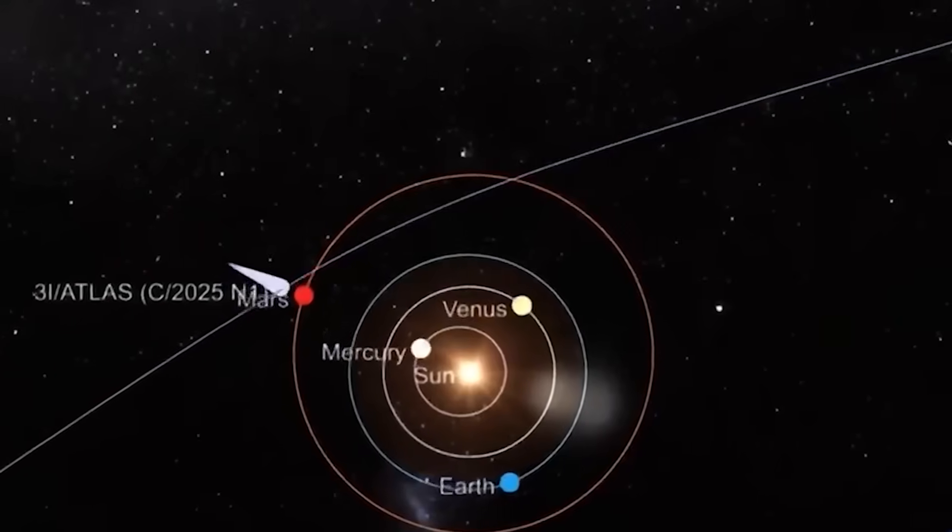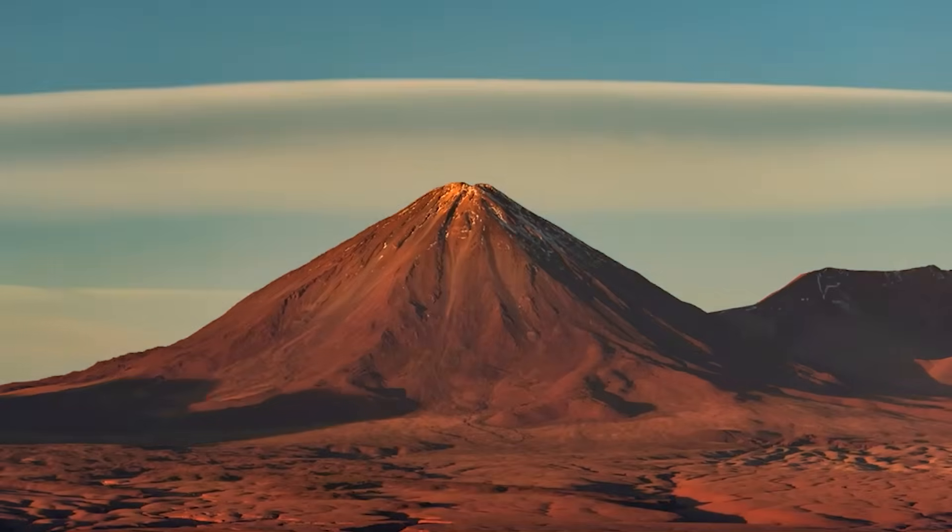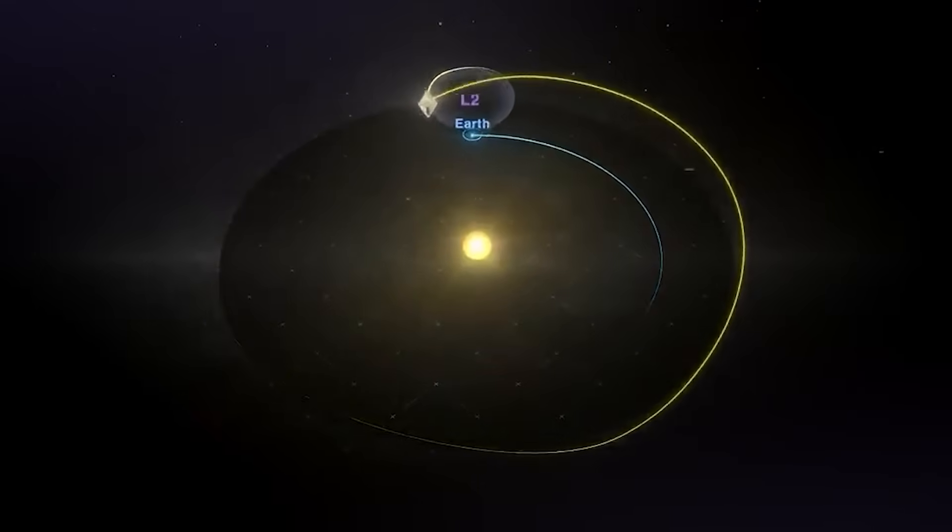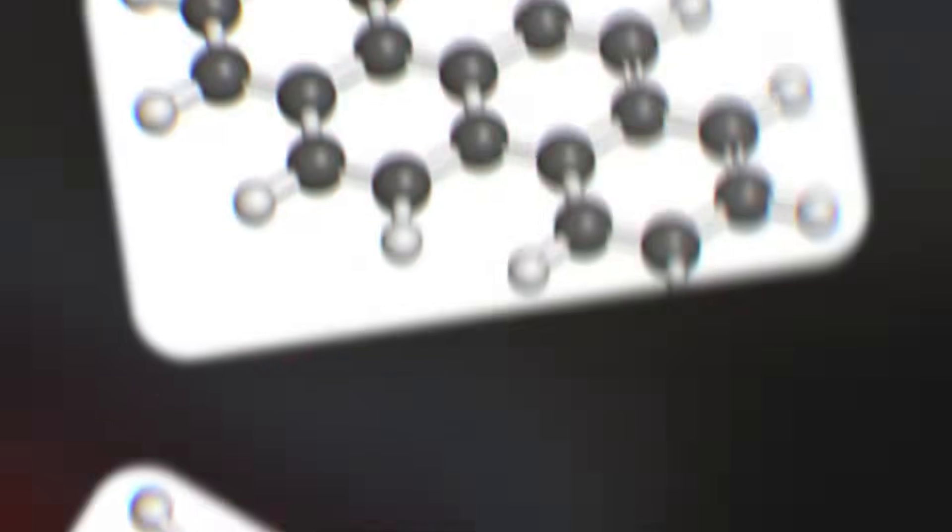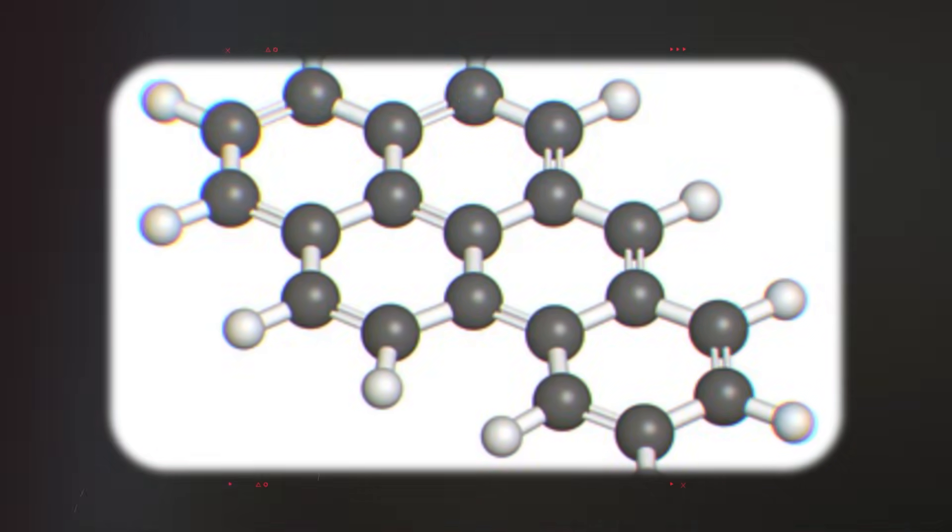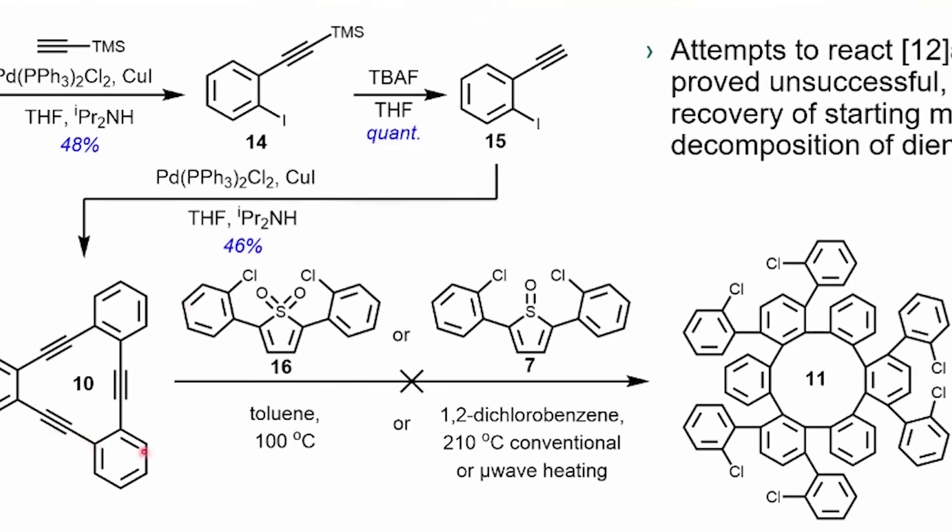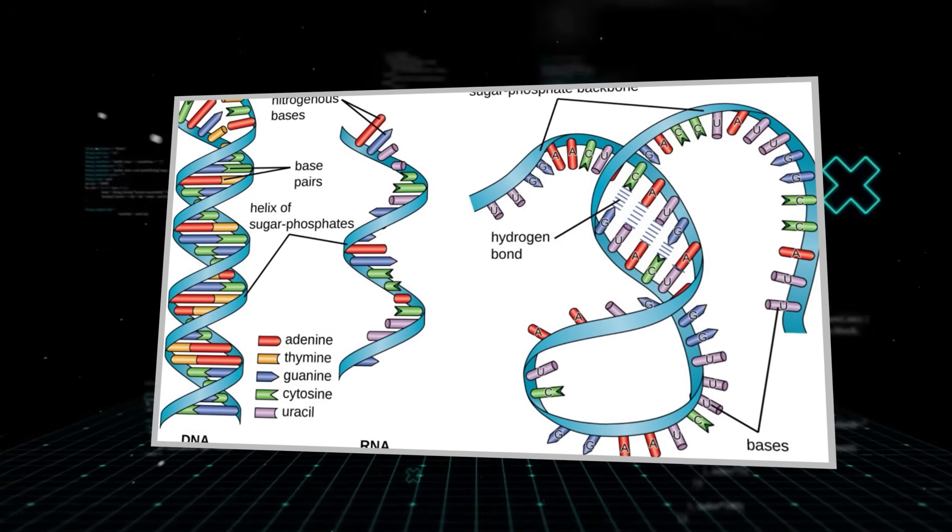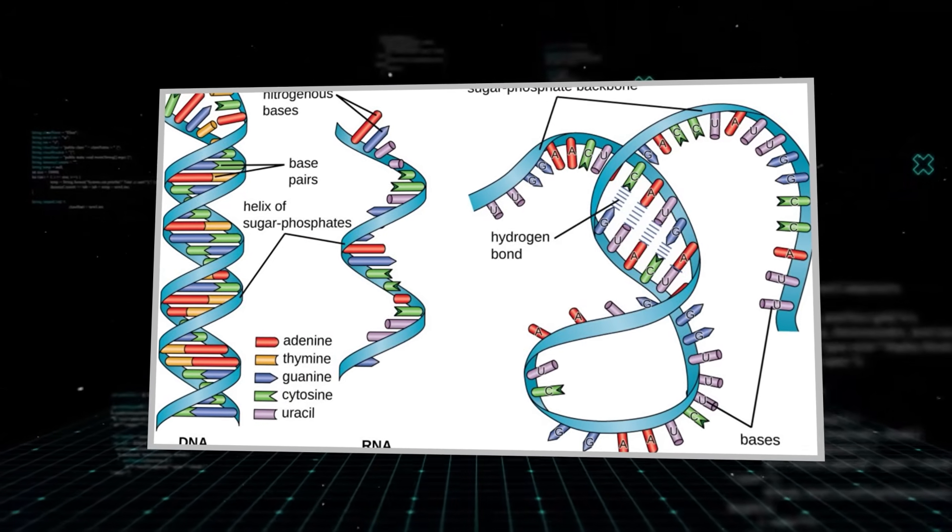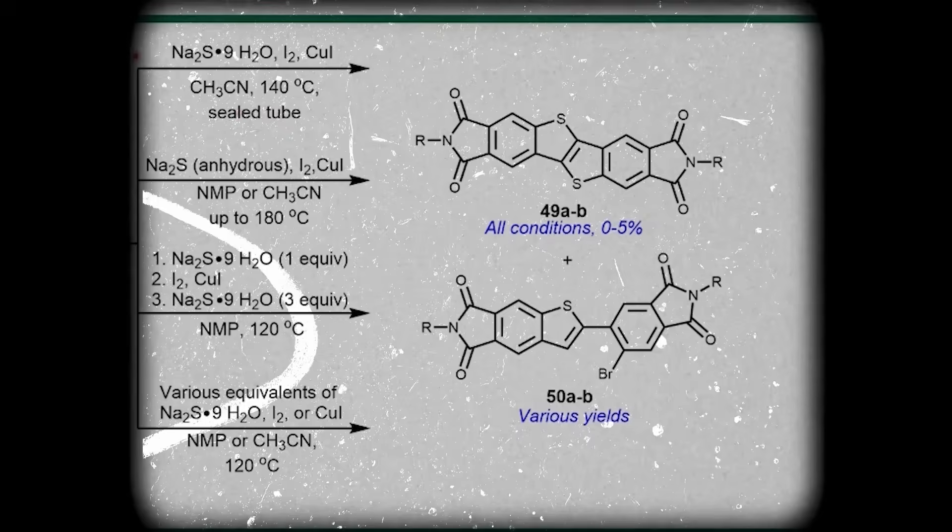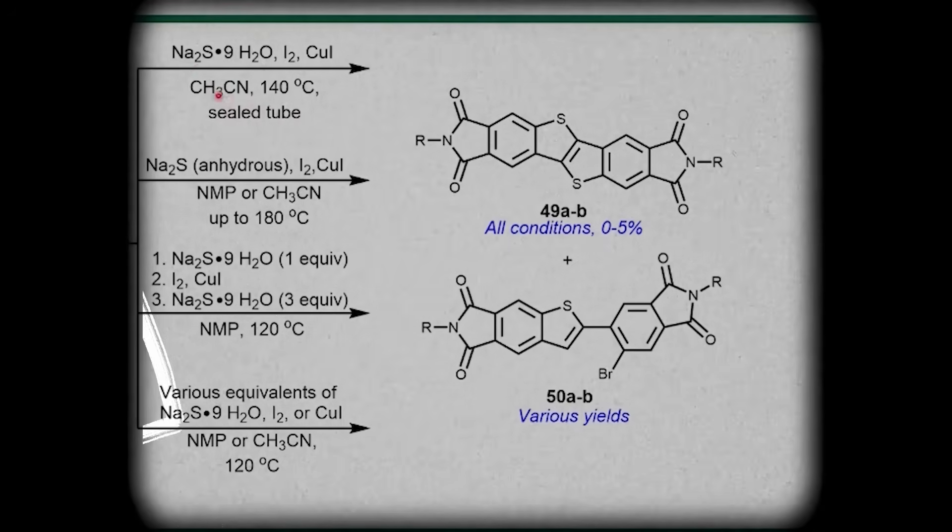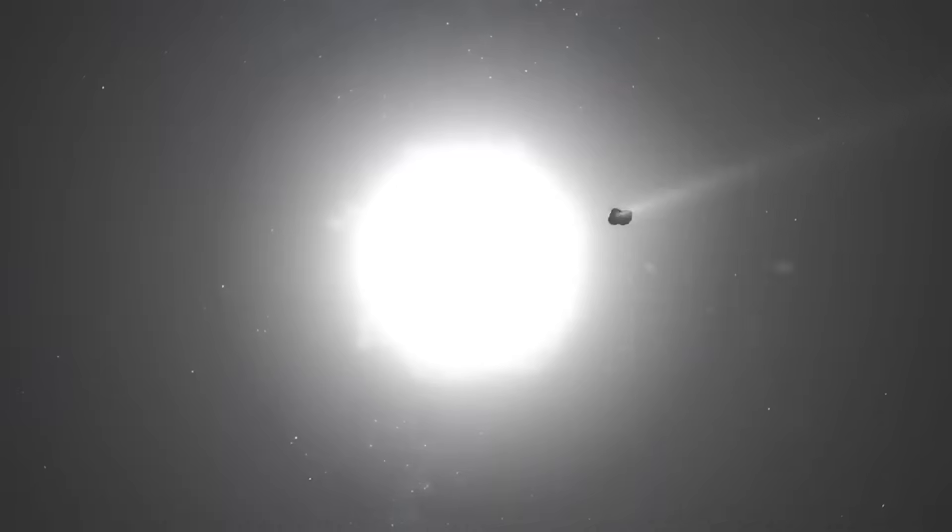It wasn't just the trajectory or the signal that terrified researchers, it was what lay beneath the surface. James Webb's spectroscopy picked up faint traces of complex carbon molecules, polycyclic aromatic hydrocarbons on the outer shell of Three-Eye Atlas. These are not just organic compounds. They are considered the building blocks of prebiotic chemistry, precursors to amino acids, RNA structures, and ultimately life itself. What makes this discovery so alarming is their purity. Unlike the chaotic mixes found in primitive comets, these molecules were perfectly structured, suggesting they were either refined or grown.